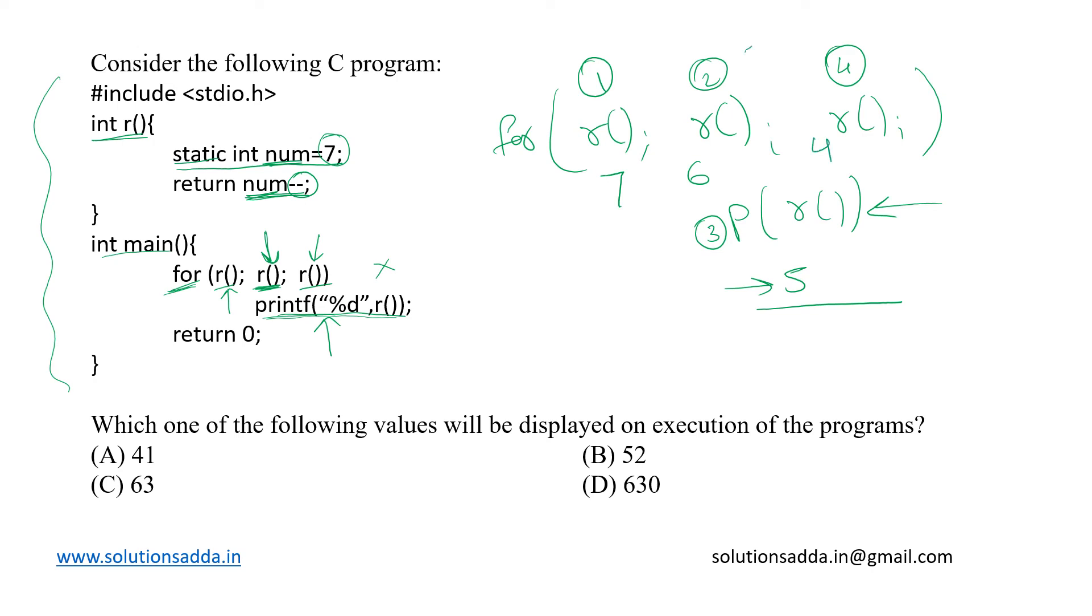After that we will go for the fifth call over here to again check the condition. This time the value returned will be 3 and for the next call we shall come over here, sixth call. This call will return the value 2 which will also be printed.